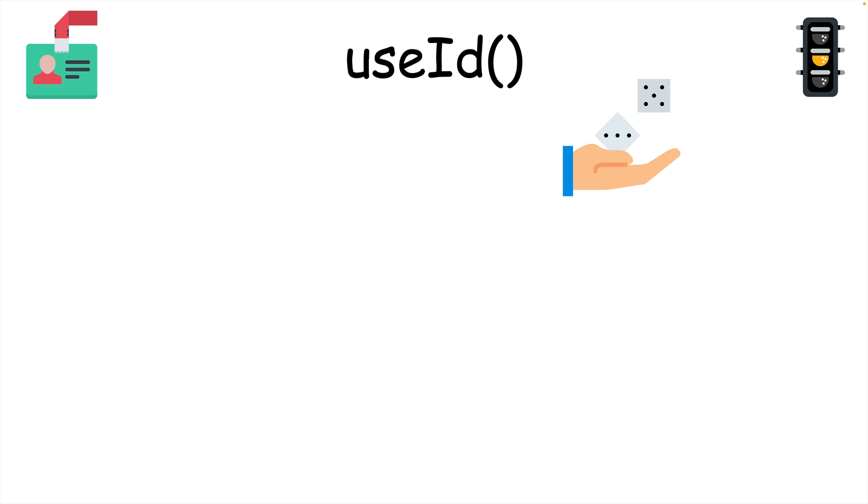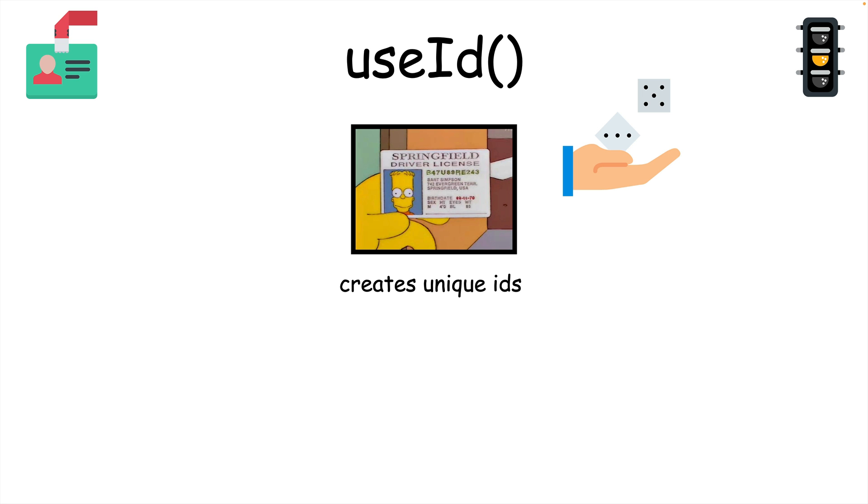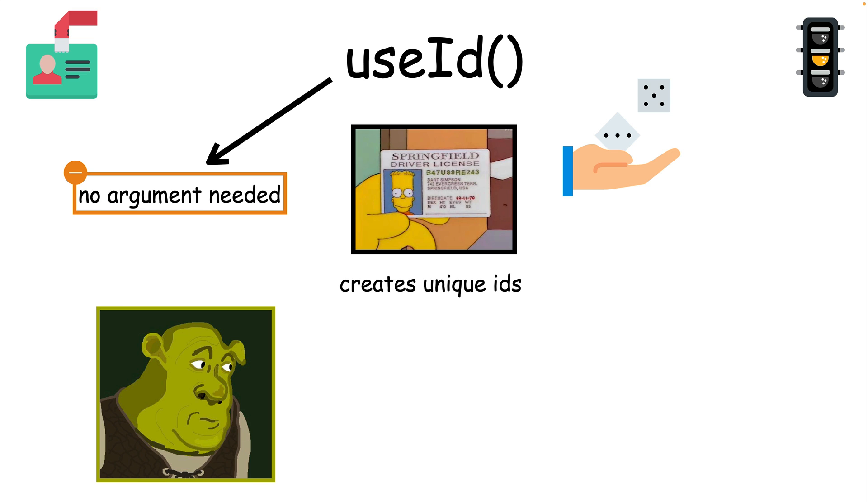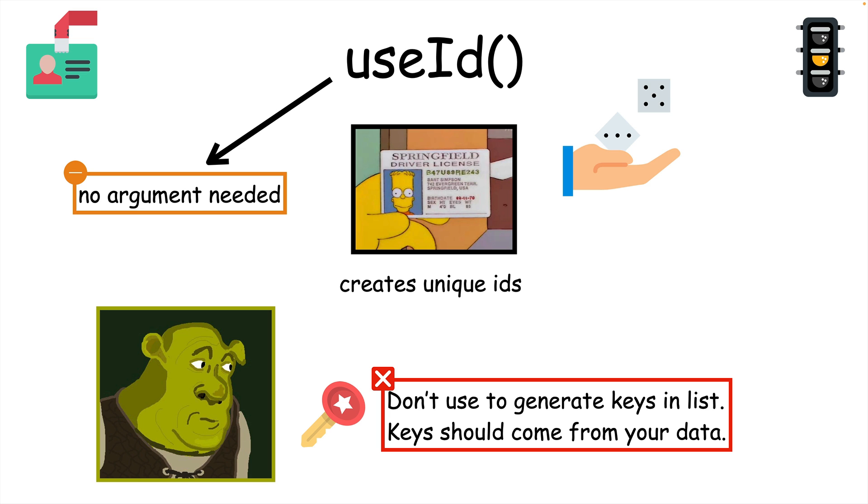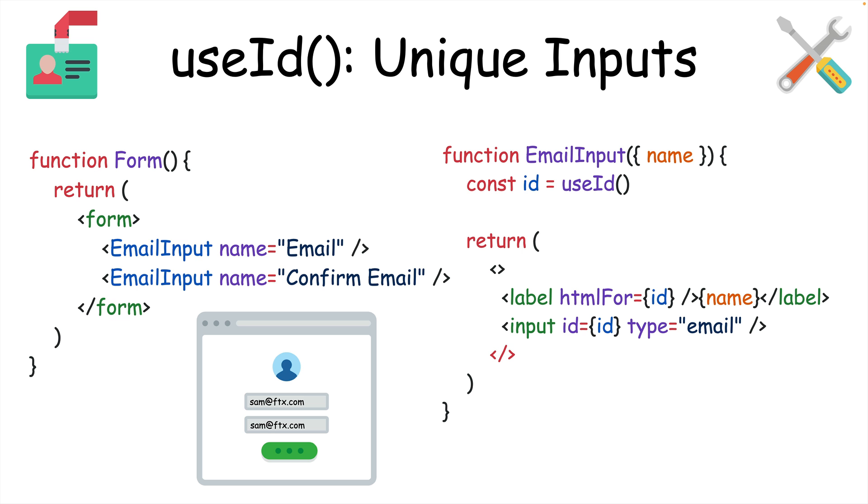useId is another random hook that does exactly what it says. It creates a unique ID when it's called, and it doesn't require any arguments. But I know what you're thinking. And no, you can't use it to create keys for your list items. It's made for creating dynamic IDs to be shared between form inputs and their labels.